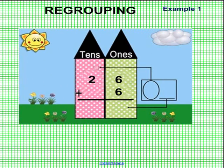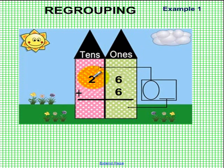Okay boys and girls, we are going to show you a couple of examples of regrouping. Here's the first one. You'll notice that we have two houses — the first house has the tens column, and the second house has the ones column. The first number we have is 26, so we have two tens and six ones, and what we're going to do is add the number six.